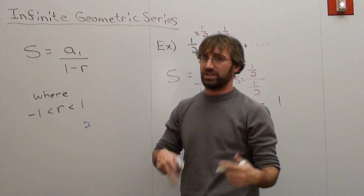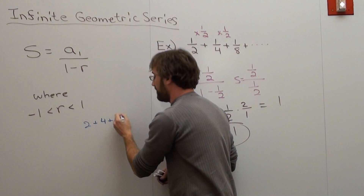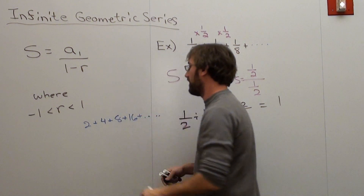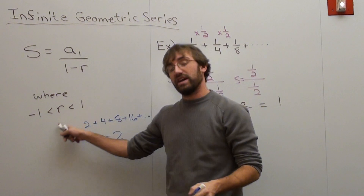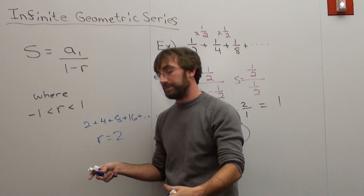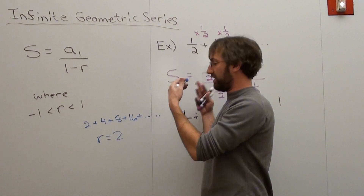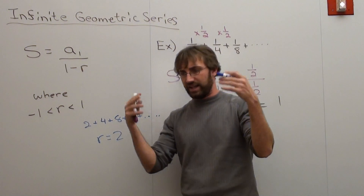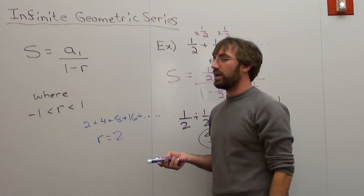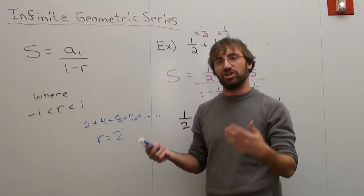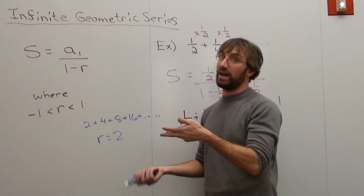Now let me give an example of something that doesn't converge. Say I have the infinite geometric series 2 plus 4 plus 8 plus 16 and so on. The common ratio here is 2, which already falls outside the required bounds. You can't apply the formula. If you keep this going forever, it adds and adds and becomes infinite — it doesn't go towards any specific finite number. It has no upper bound. This series is something that diverges.